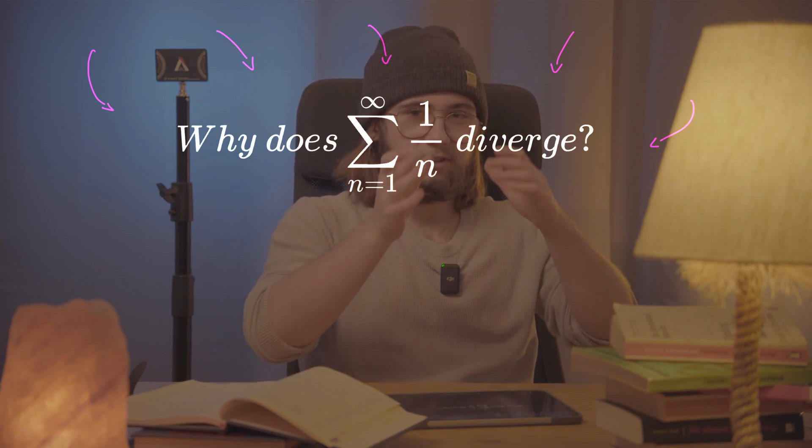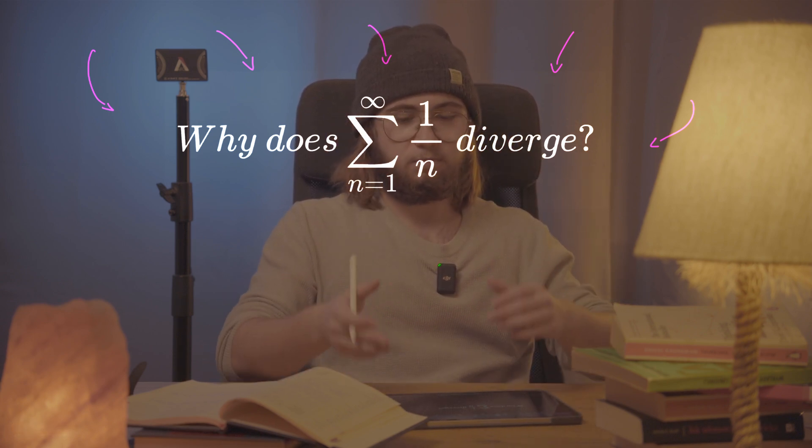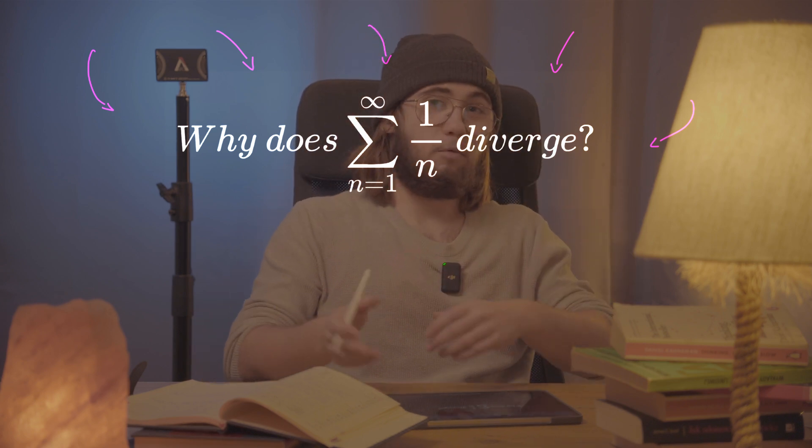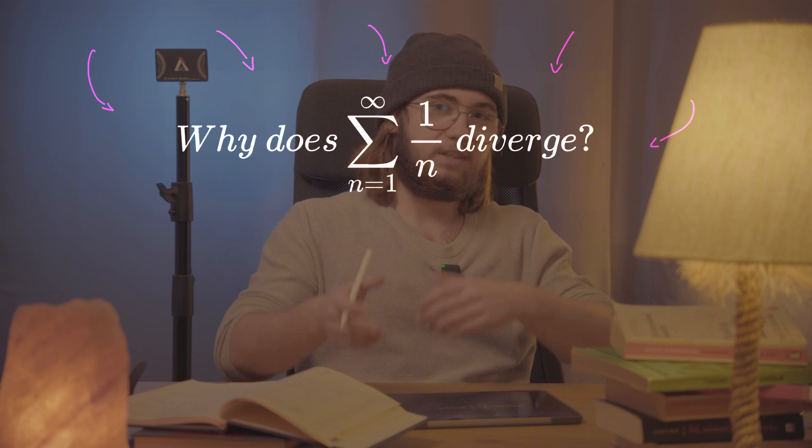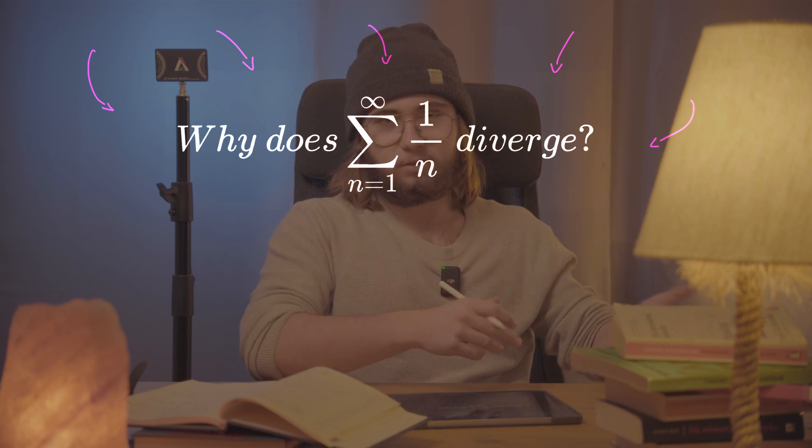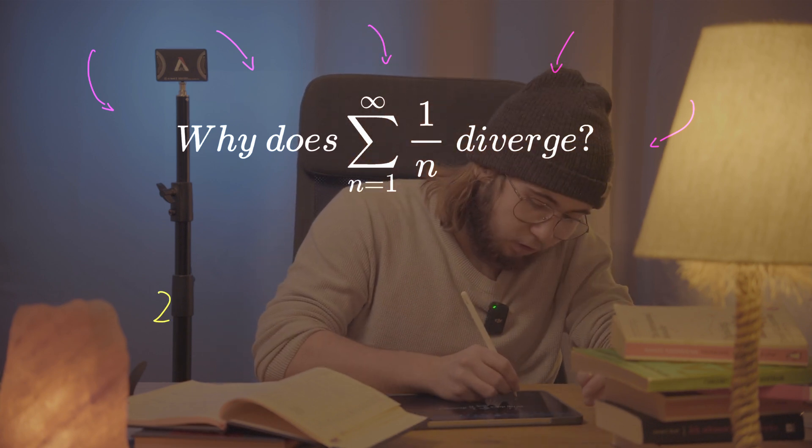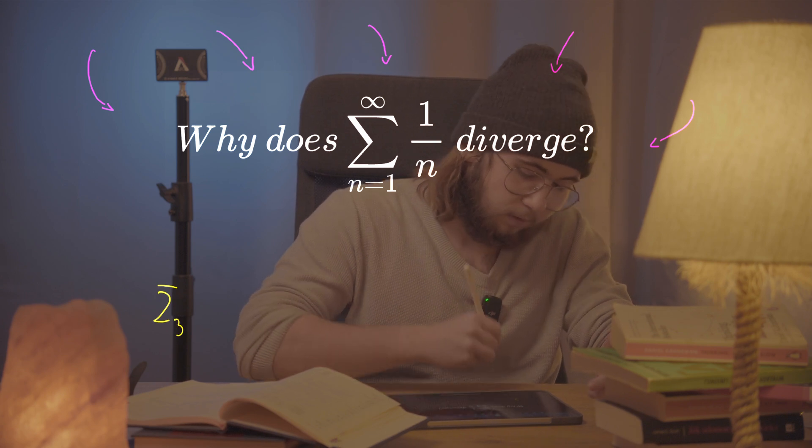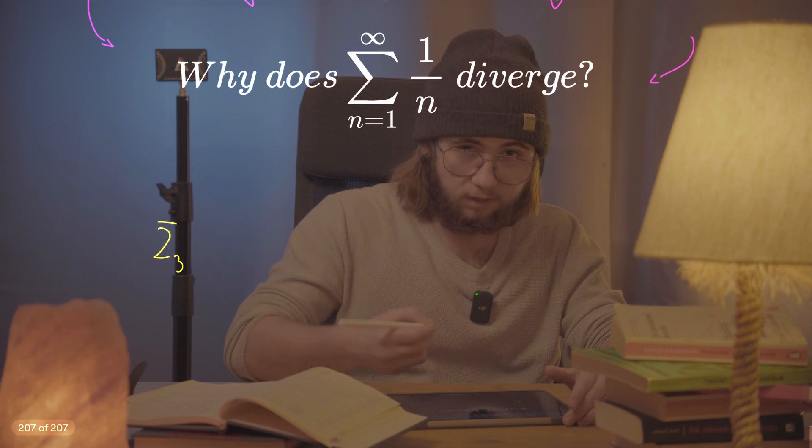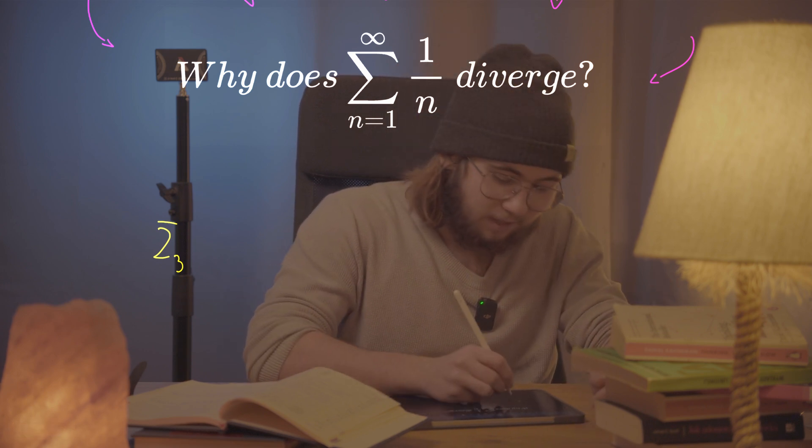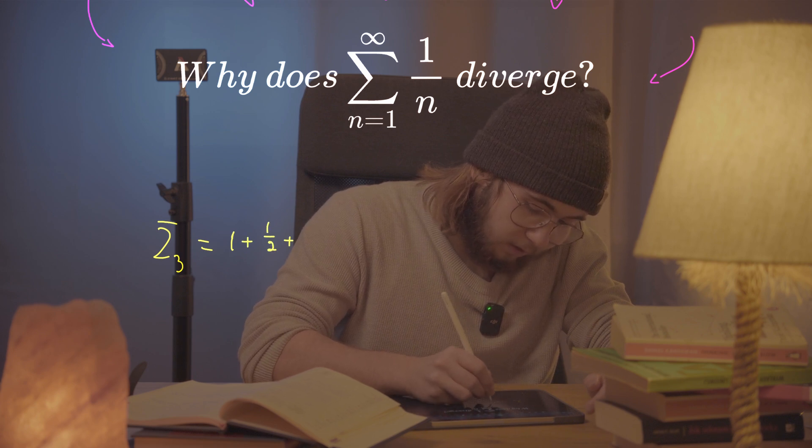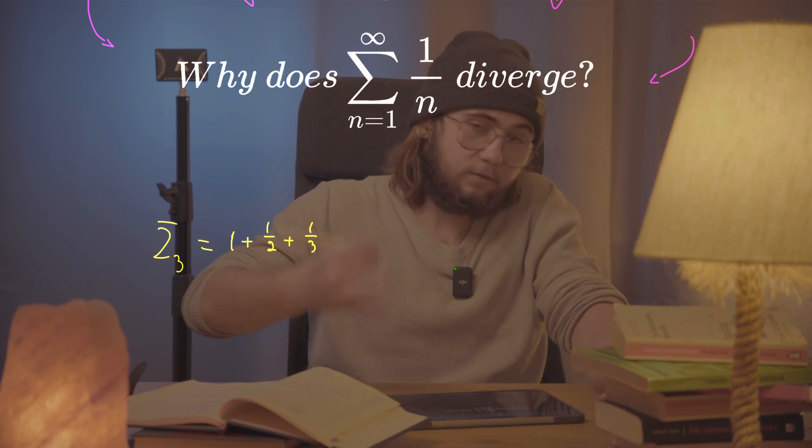A partial sum is basically just a sum of some given number of terms, beginning with the first term and ending at the one subscripted with the subscript of the partial sum. For example, the partial sum I'm going to be denoting as sigma sub 3, the partial sum of the first three terms, is going to be 1 plus a half plus a third - so the sum of the first three terms of the harmonic series.